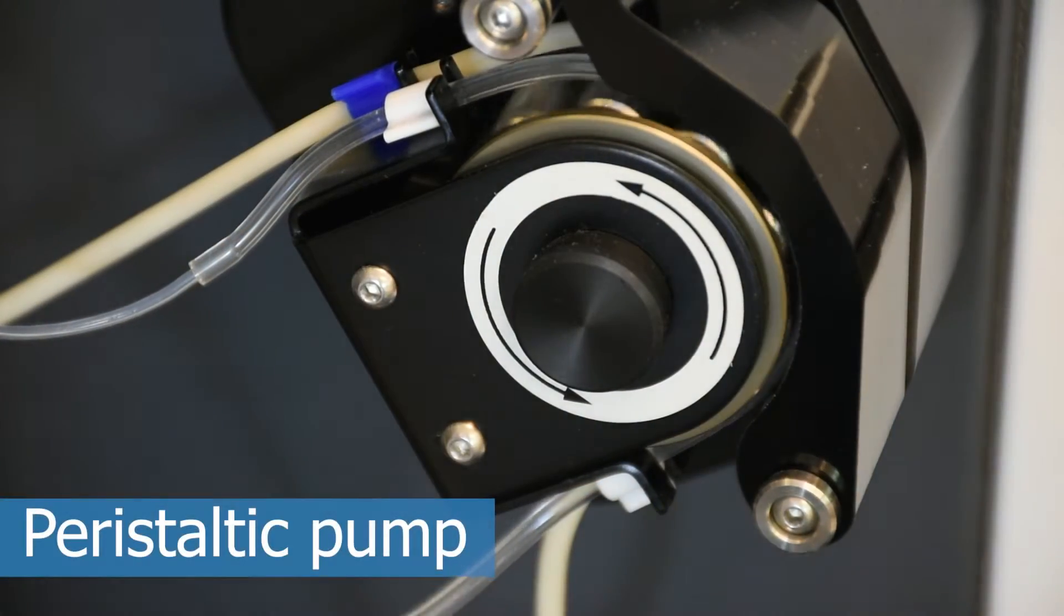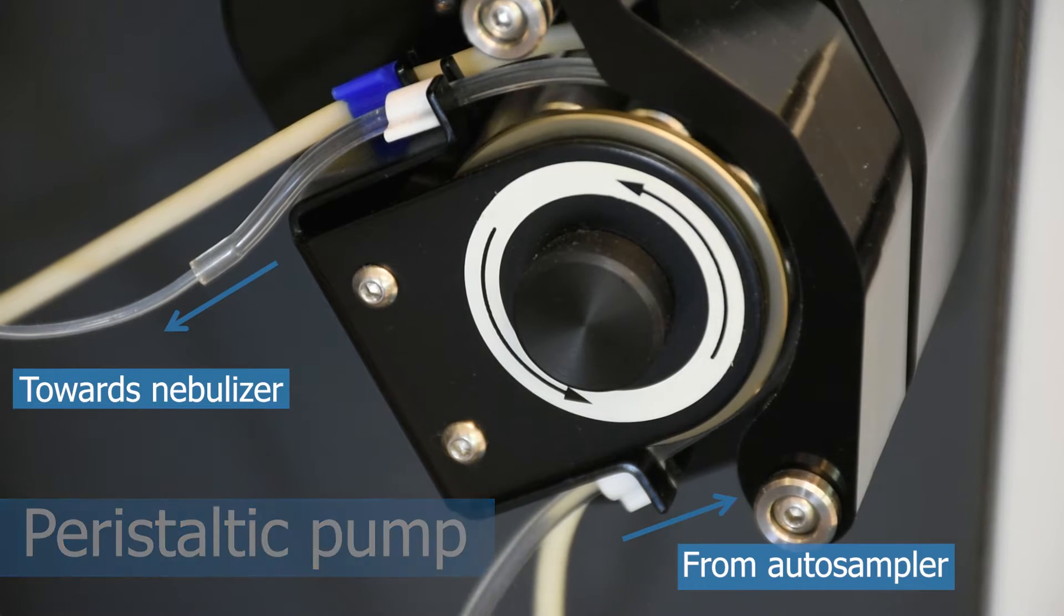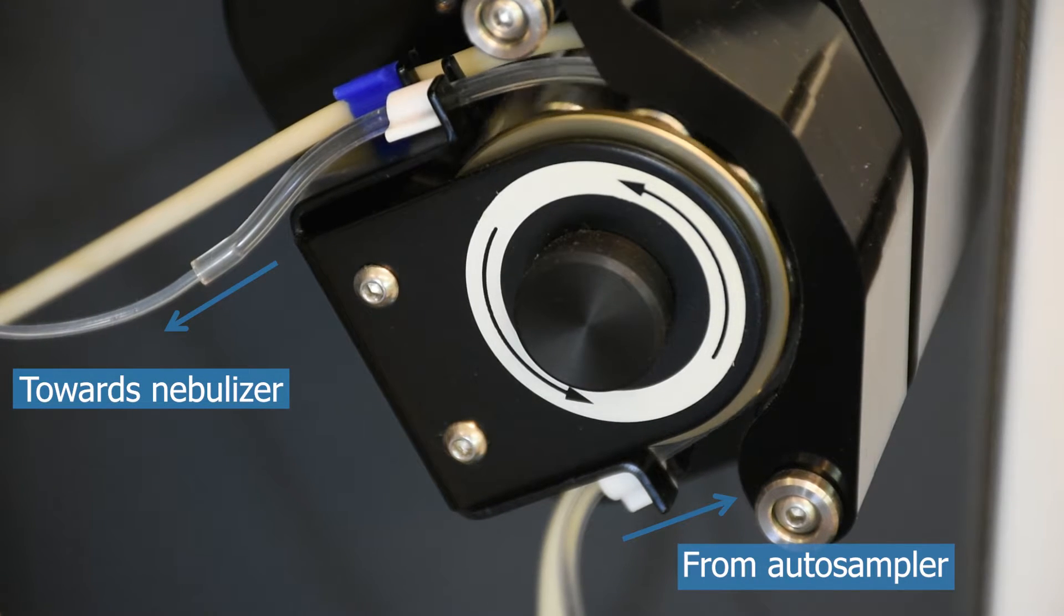A peristaltic pump draws the solution through a capillary tube, taking it from the autosampler and bringing it to the nebulizer.